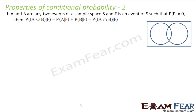We have another very important property of conditional probability: probability of A union B given F is nothing but probability of A given F, plus probability of B given F, minus probability of A intersection B given F.